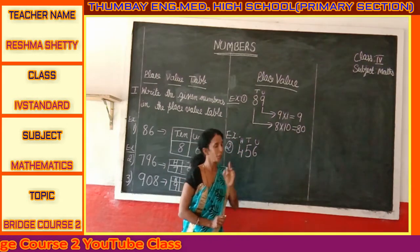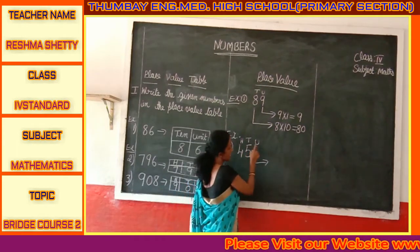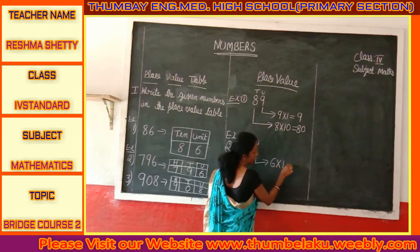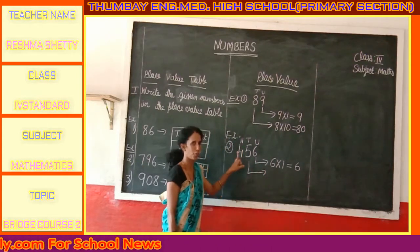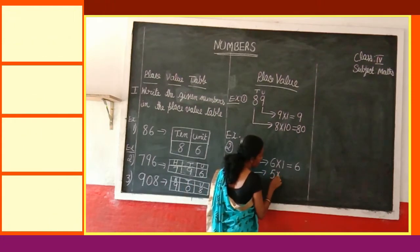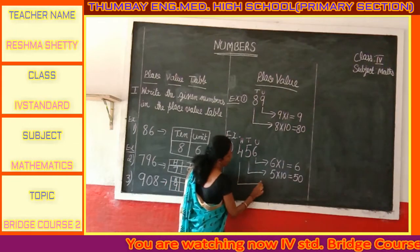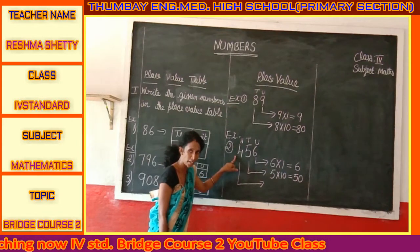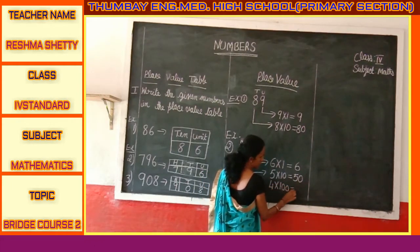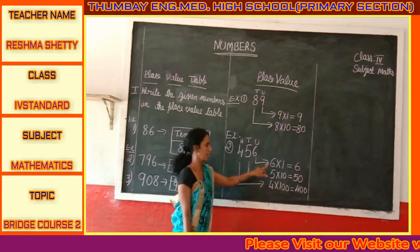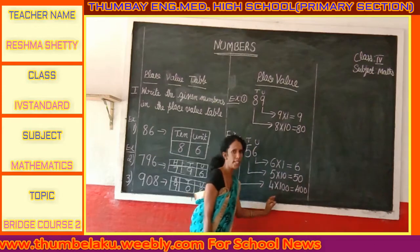Let us find the place value of each digit. First, we find the place value of 6. 6 is in the unit place, so 6 multiplied by 1 equals 6. The place value of 6 is 6. Next, the place value of 5: 5 is in the tens place, so 5 multiplied by 10 equals 50. The place value of 5 is 50. Next, 4 is in the hundreds place, so 4 multiplied by 100 equals 400. The place value of 4 is 400.